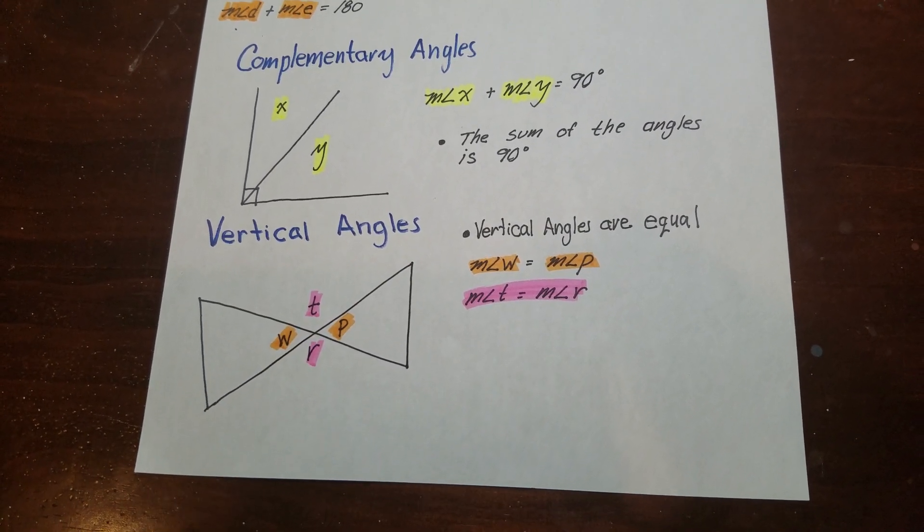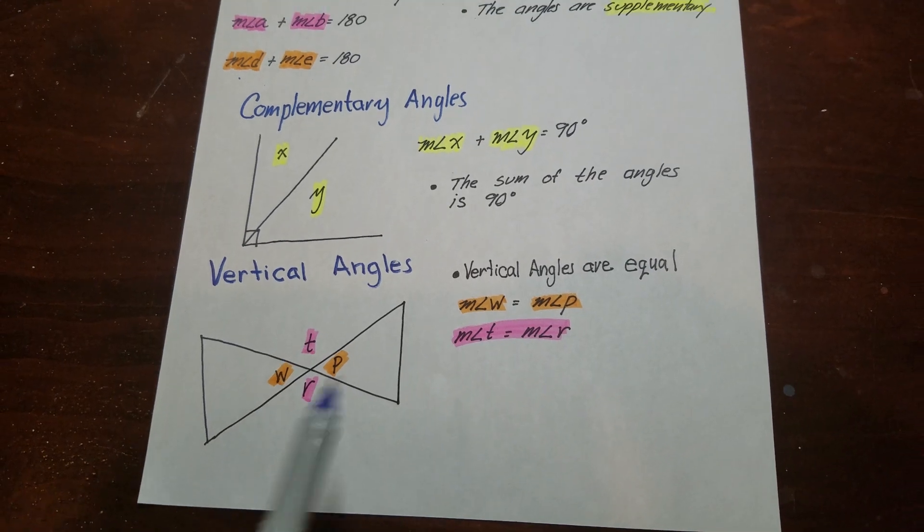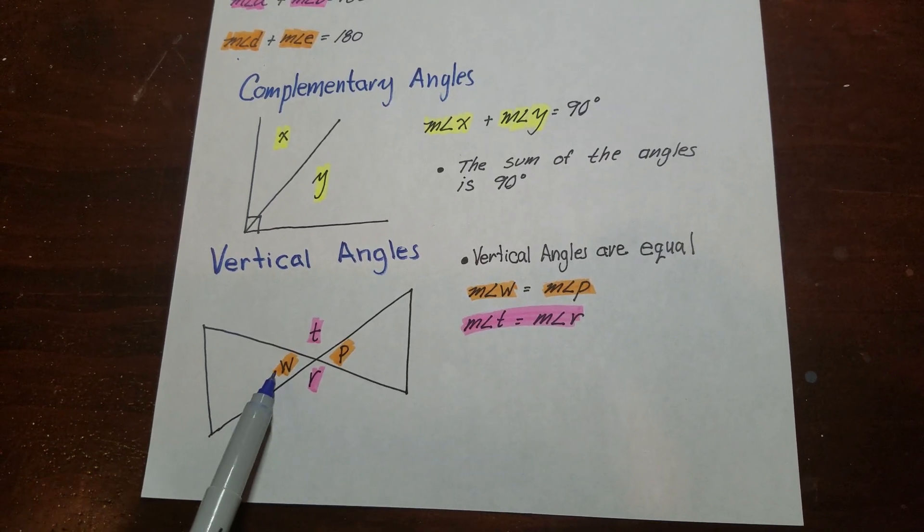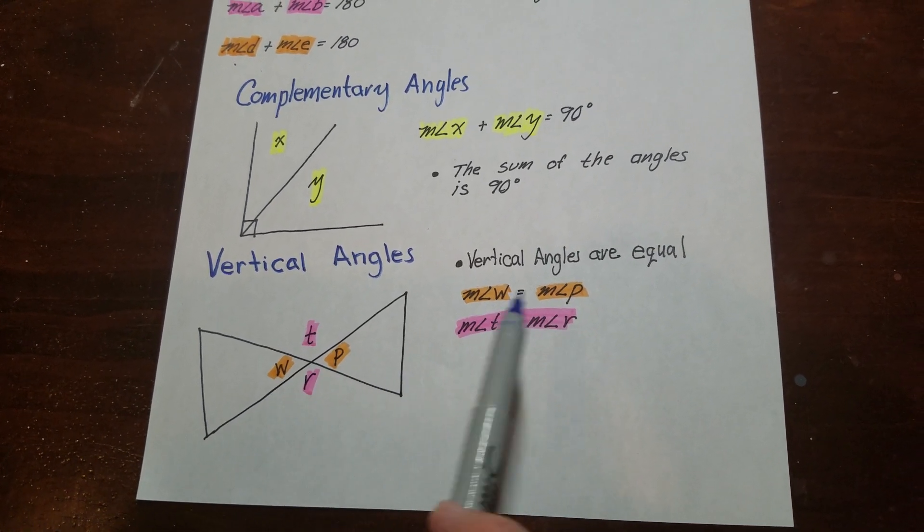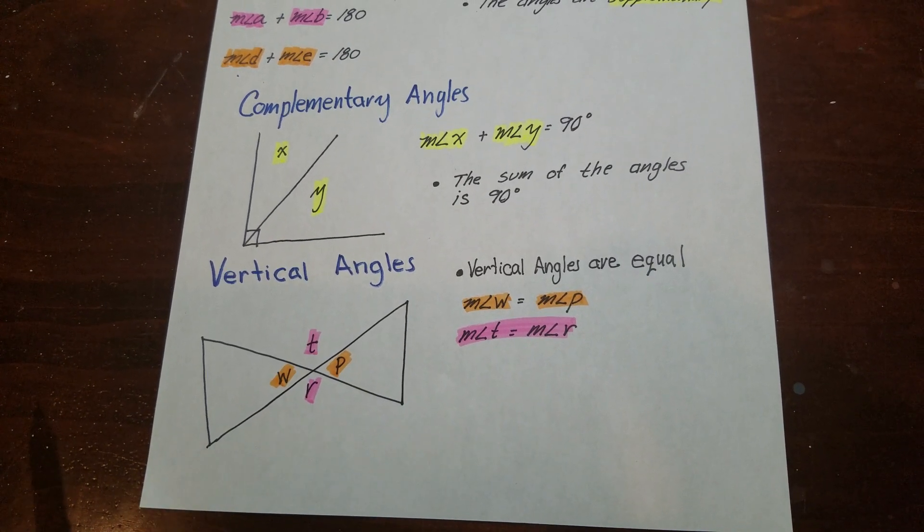Okay, so when we set up equations for those, we just write that they are equal. So you can see I have angle W is equal to angle P. Angle T is equal to the measure of angle R.